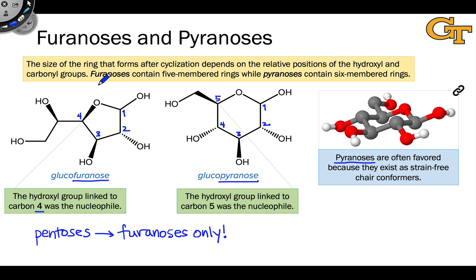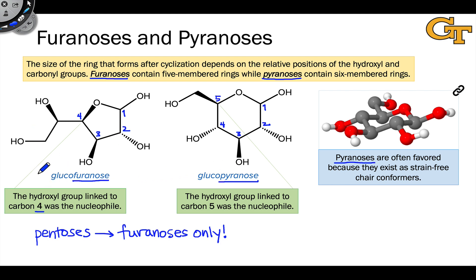One last thing to note is that we can combine the furanose and pyranose nomenclature with the name of the sugar based on the stereochemical relationships between the hydroxyl-bearing stereocenters. So we can talk about, for example, glucopyranose — meaning take the open chain form of glucose and cyclize it to form a six-membered ring — or glucofuranose, meaning take that same open chain form and cyclize it to form a five-membered ring. We can also combine this nomenclature with D and L; for example, both of these are examples of D-glucoses, and you can verify this by thinking about the Fischer projection of carbon-5 in both of these structures.